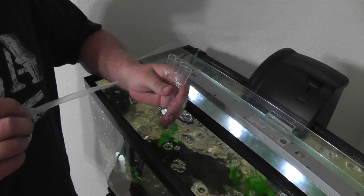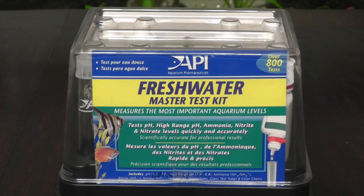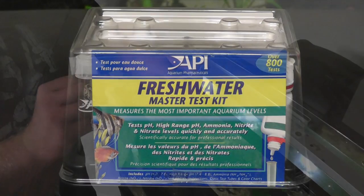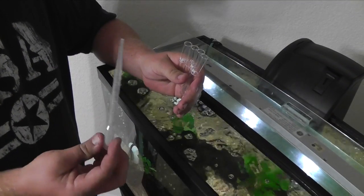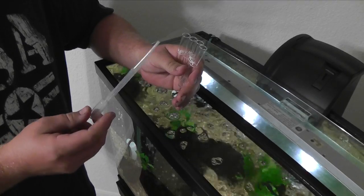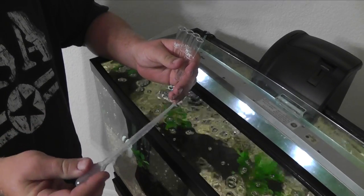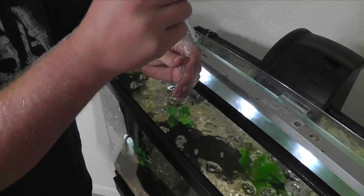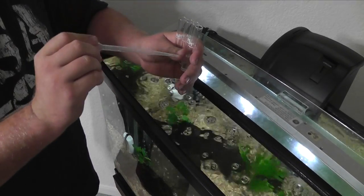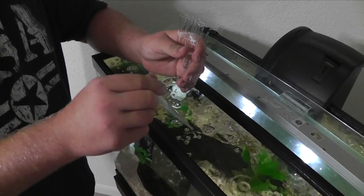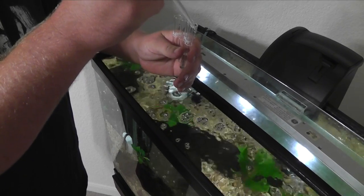All right y'all, what you're going to do is there's an API test kit you can buy and it comes with four test tubes like so. I bought this at my local fish store called Nolan's and it's just a little eyedropper. You're going to stick it in your tank, right? And you're going to fill it up to that little line right here. That's five milliliters. That's what you need to test your water.